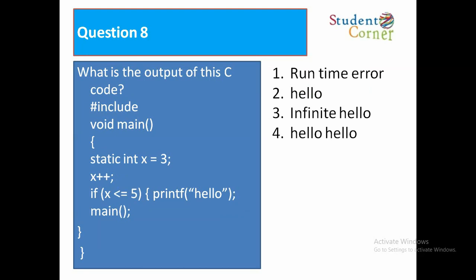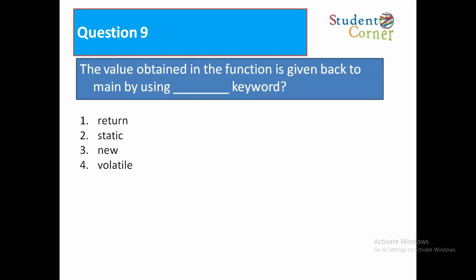Question 8: What is the output of this C code? #include, void main(), static int x = 3, x++, if(x <= 5) printf("hello"), main(). Option 1: Runtime error. Option 2: Hello. Option 3: Infinite hello. Option 4: hello hello. Option 4 is correct. Because with static, the previously calculated value is stored. Initially x = 3, incremented to 4, 4 <= 5 so print hello, call main again. Now x = 4, incremented to 5, 5 <= 5, print hello again. Call main, x = 5, incremented to 6, 6 <= 5 is false, so stops. Output is hello hello.